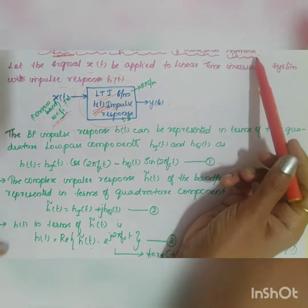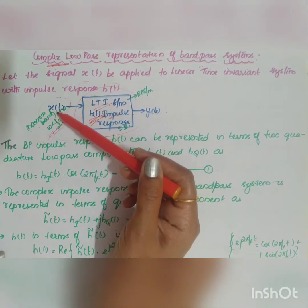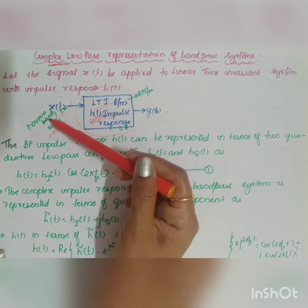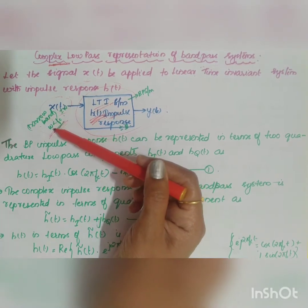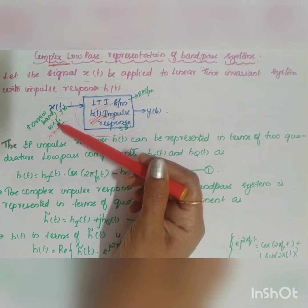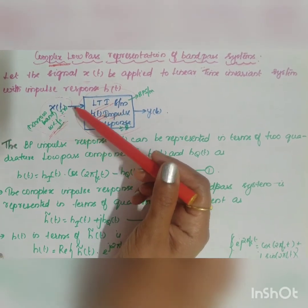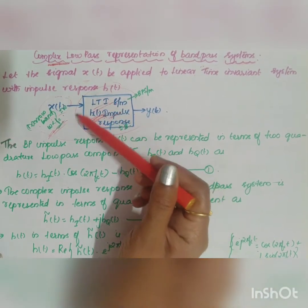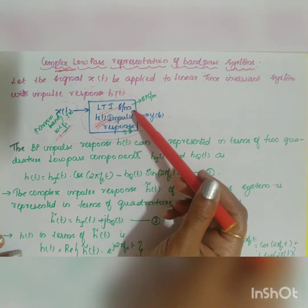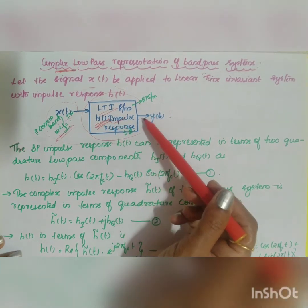You are considering a band pass signal — a band-limited or narrowband signal — satisfying the condition W less than fc, meaning the message signal bandwidth is less than the carrier frequency fc. This signal is given to an LTI (linear time invariant) system which has an impulse response h(t), and the output is y(t).